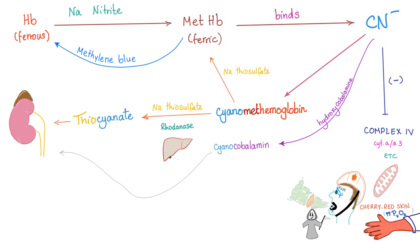The hemoglobin starts as ferrous. Thanks to sodium nitrite, it becomes methemoglobin with ferric. Without methemoglobin, cyanide binds complex 4 (cytochrome A3 in the electron transport chain), destroying cellular respiration. With methemoglobin present, it distracts cyanide and forms cyanomethemoglobin, sparing the mitochondria. Sodium thiosulfate then converts cyanomethemoglobin into thiocyanate. Methylene blue can later reconvert methemoglobin back to normal hemoglobin.